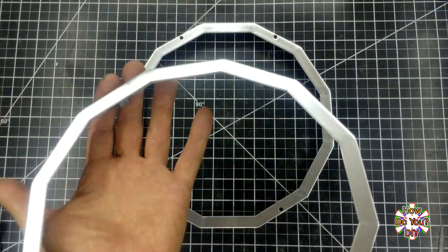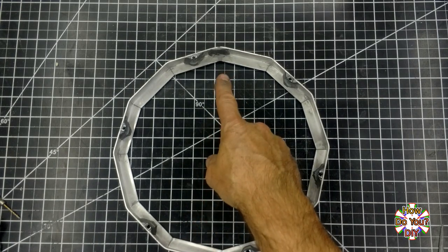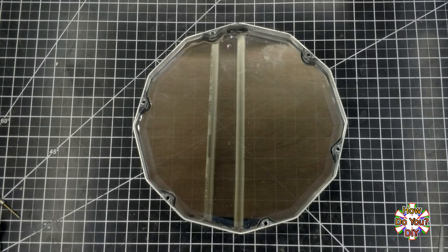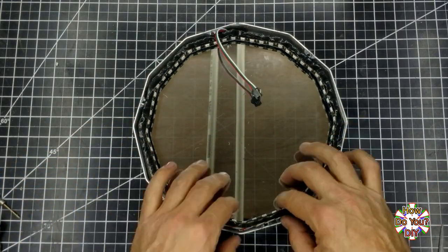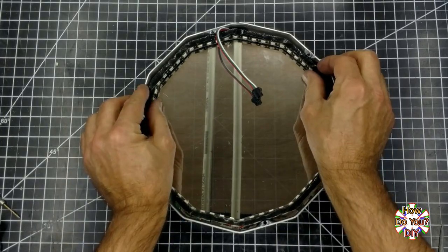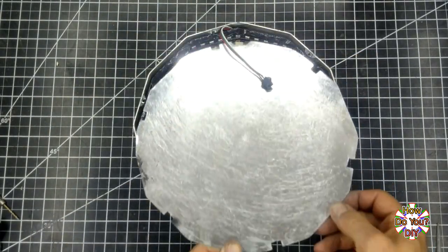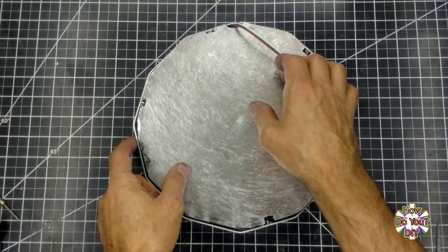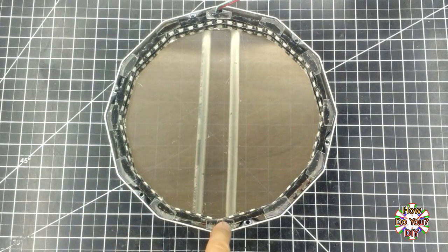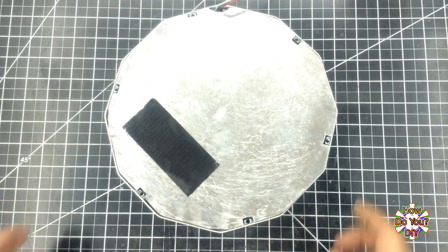With the frame painted, it's time to put it all together. Before I clamp the sheet metal into place, I need to make one more addition. I added some pieces of plastic to go in between the LEDs and the sheet metal. I don't want them to short out.